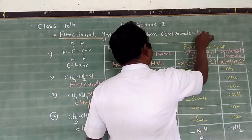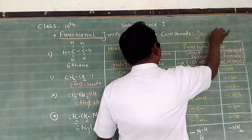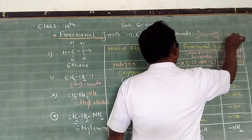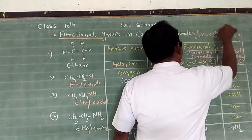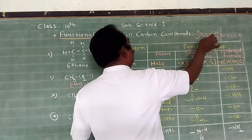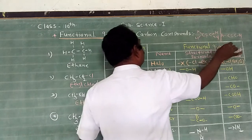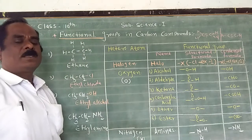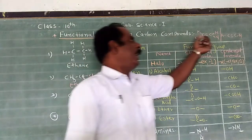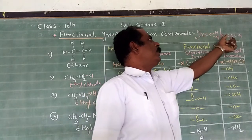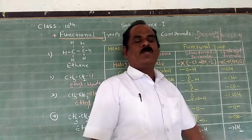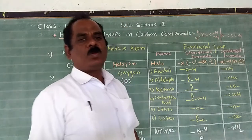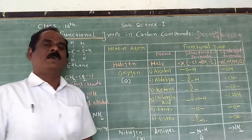In the case of ethene, the double bond acts as the functional group. In the case of acetylene, the triple bond acts as the functional group, because here hydrogen is substituted by the double bond, and in acetylene hydrogen is replaced by the triple bond. Therefore, double bonds and triple bonds also act as functional groups.